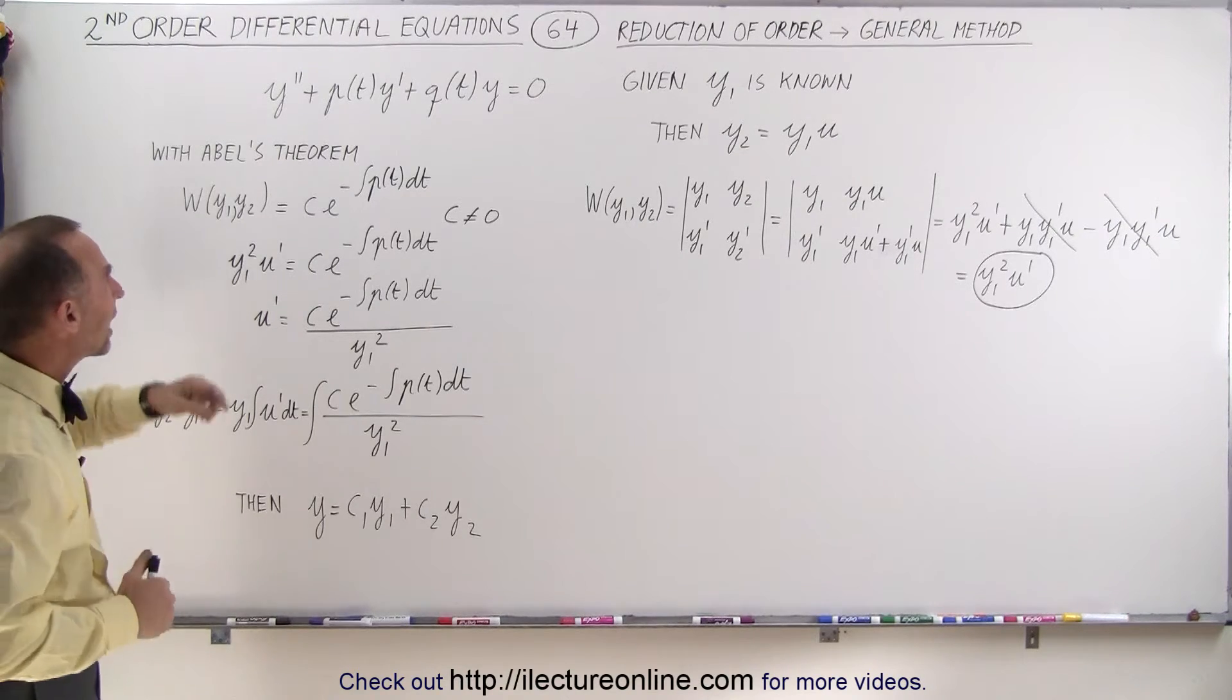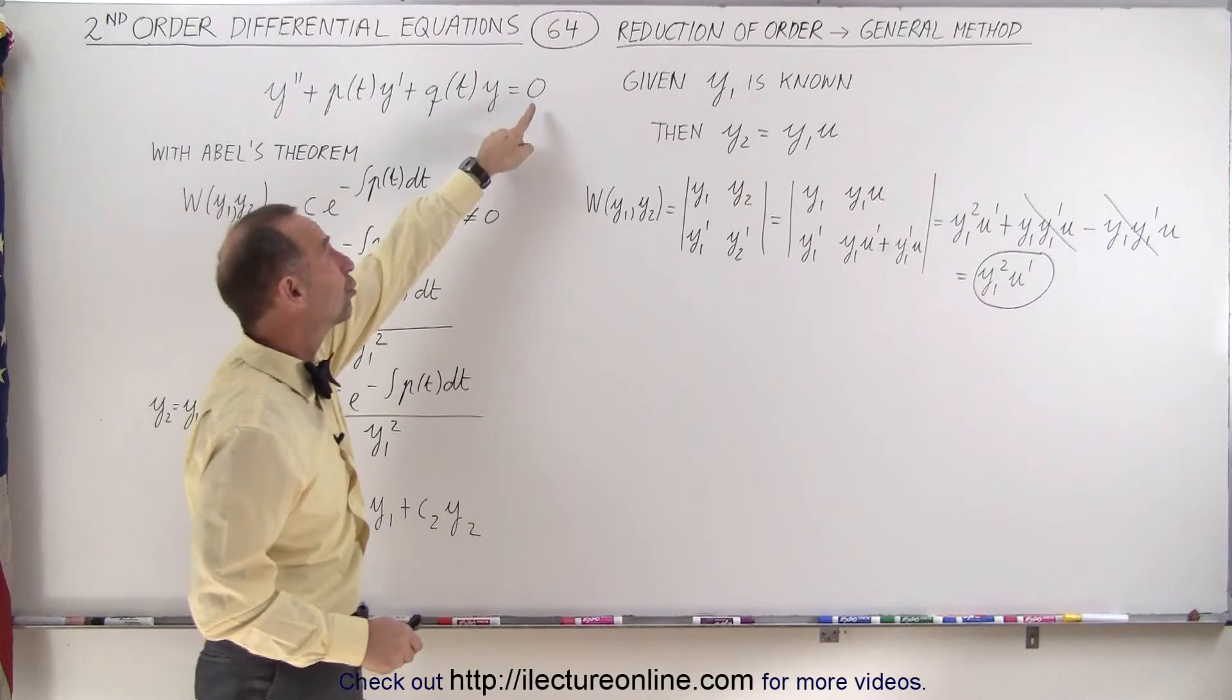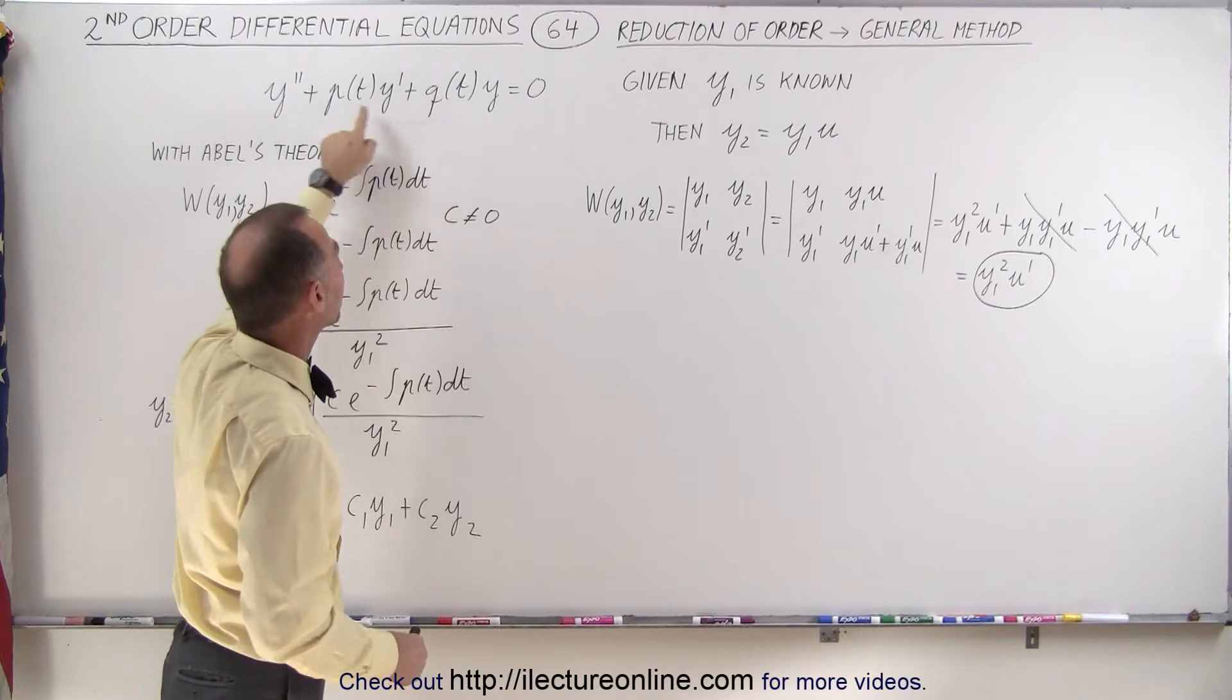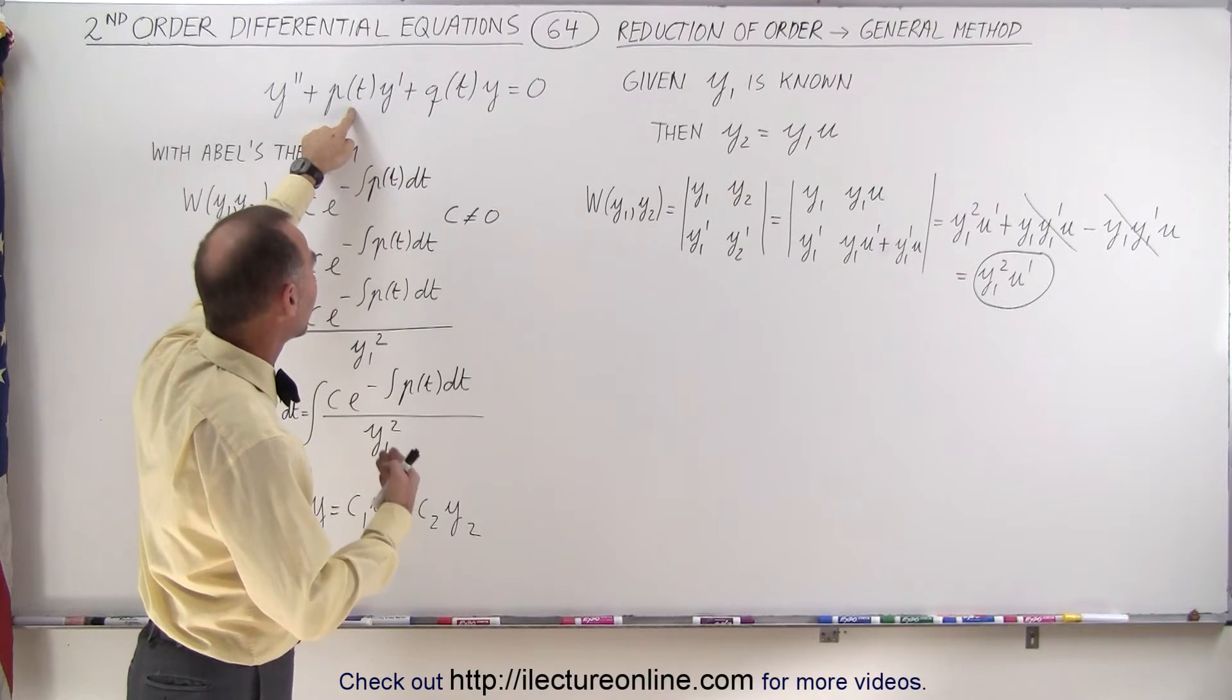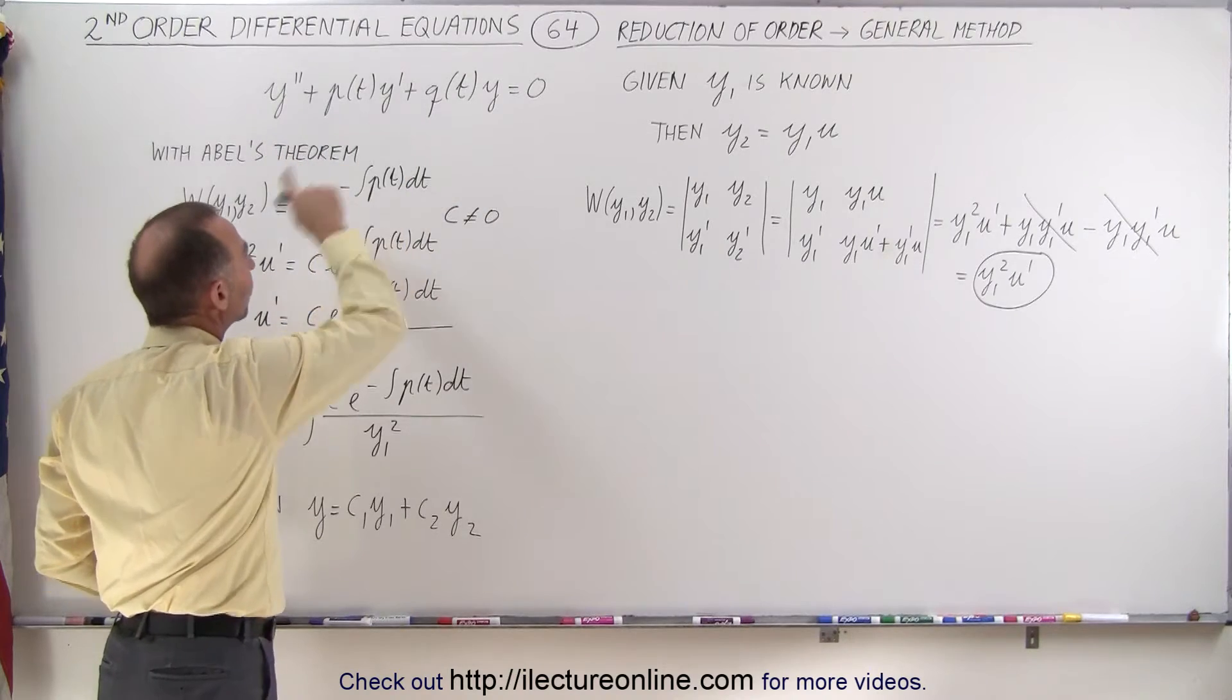That's the method where we have a second order differential equation. We're starting with the homogeneous portion, and the coefficients are not constant. They are variables, they're functions of t, and when we have everything put into the standard form,